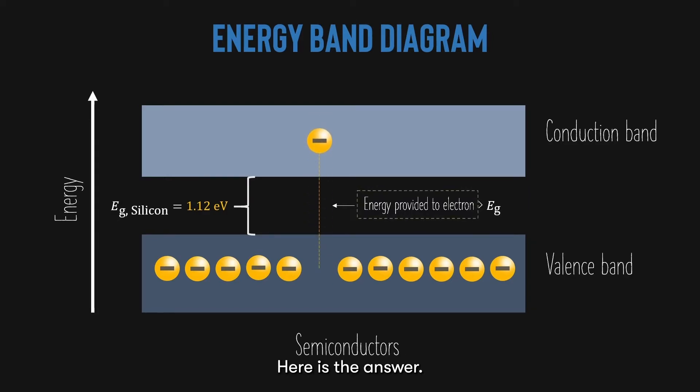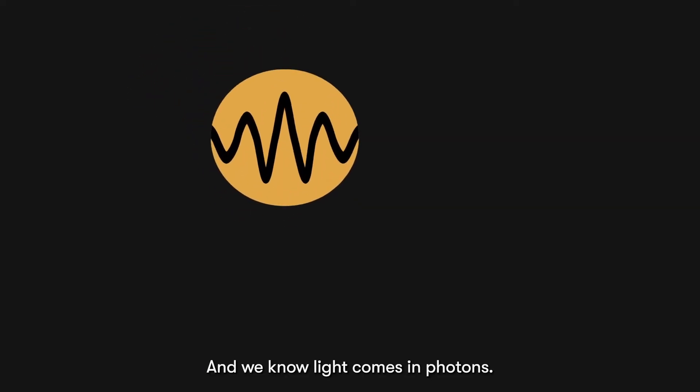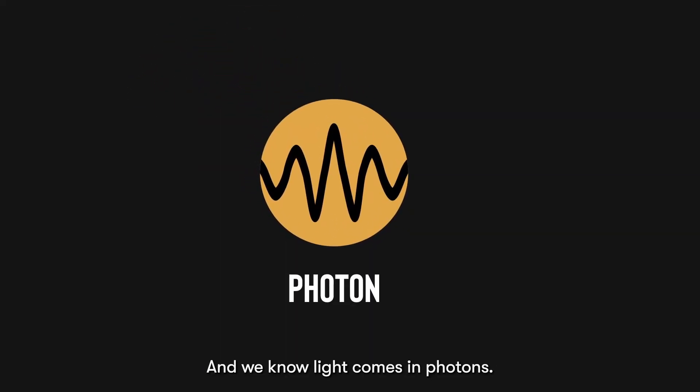Here is the answer. Now, we know for solar cells, this energy has to somehow come from light. And we know that light comes in photons. So, the energy that is absorbed are actually photons.